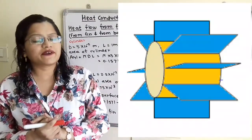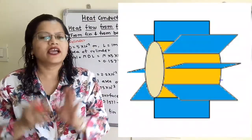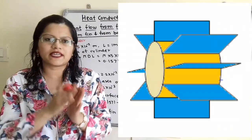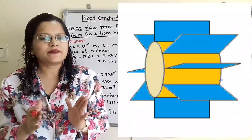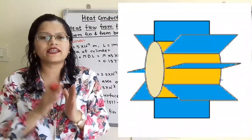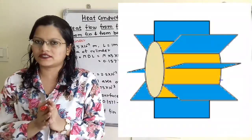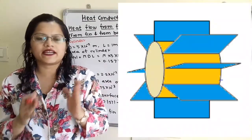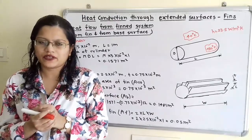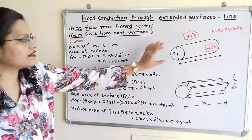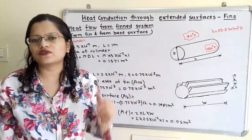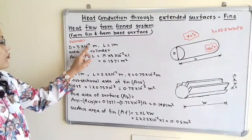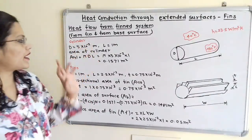Heat is transferred from the base of the cylinder as well as from the fins, so this is the case of heat transfer from the fin system. Let us understand the given data with the help of a diagram. The diameter of the cylinder is given in centimeters, so we have to convert it into meters: D = 5 × 10⁻² m.